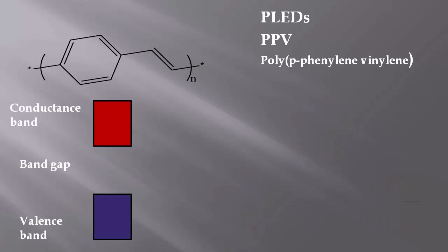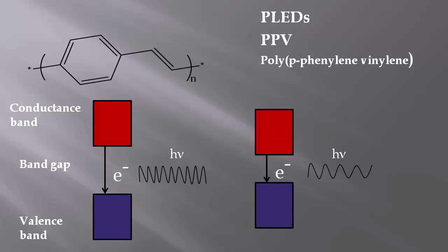And as the emission of light is the energy given off upon the relaxation of an electron, the color of the emitted light can be changed by changing the band gap, and therefore the energy of the photons.